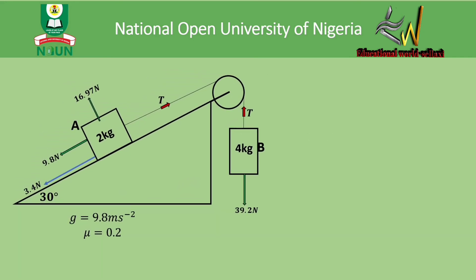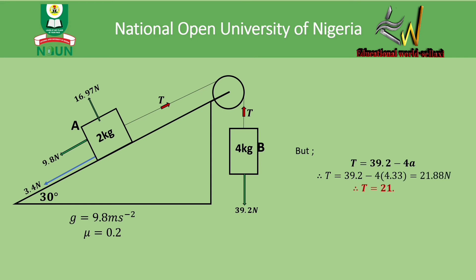To find the tension in the string, we use equation two: T = 39.2 − 4a. Substituting a = 4.33, we get T = 39.2 − 4(4.33) = 21.88 newtons. So the tension in the string is 21.88 newtons. That brings us to the end of today's lesson.